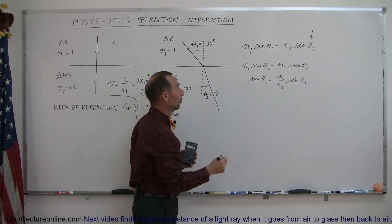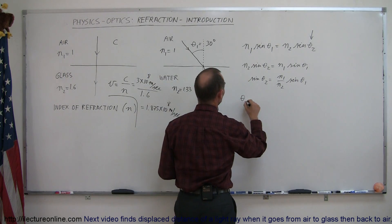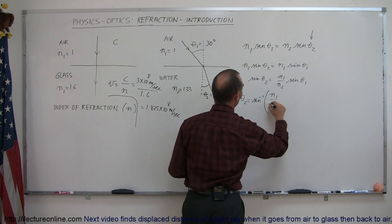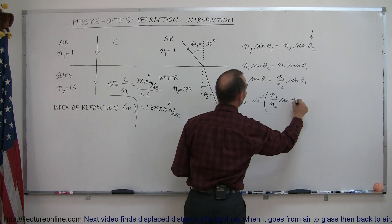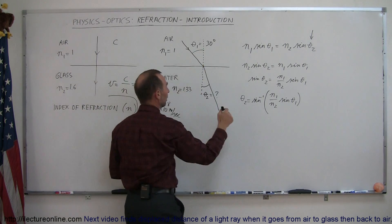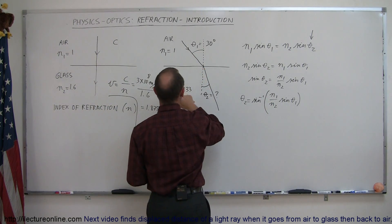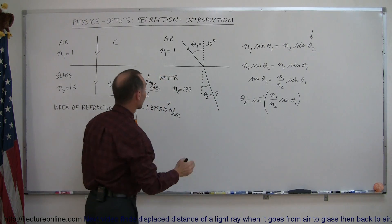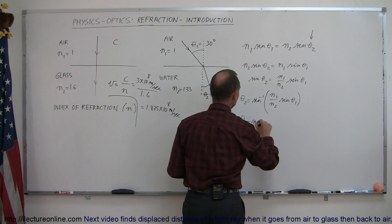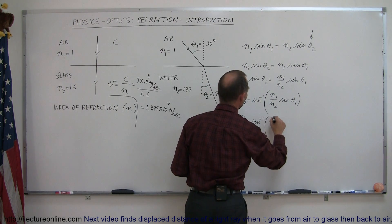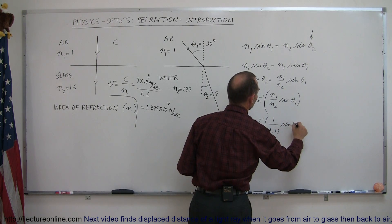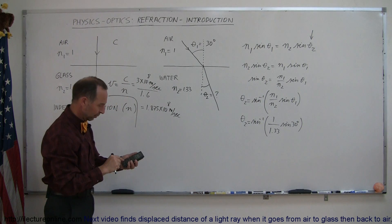Finally, to find theta sub 2, we take the arc sine. So theta sub 2 equals the inverse or arc sine of this whole thing, which is n1 over n2 times the sine of theta sub 1. Now plug in the values that we have. We know that theta sub 1 is 30, n1 is 1, and n2 is 1.33. In this particular case, because it's from air into water, we can say that theta sub 2 is equal to the arc sine of n1, which is 1, and n2, which is 1.33, times the sine of 30 degrees.